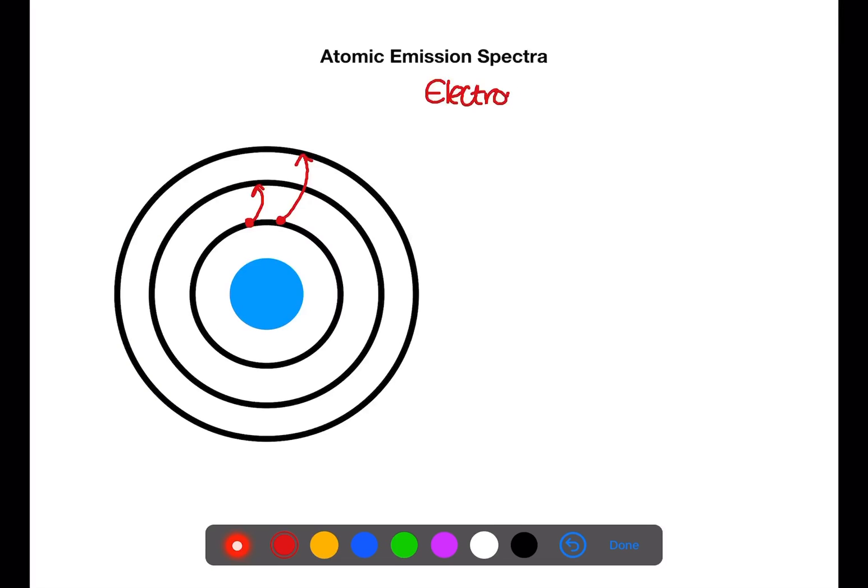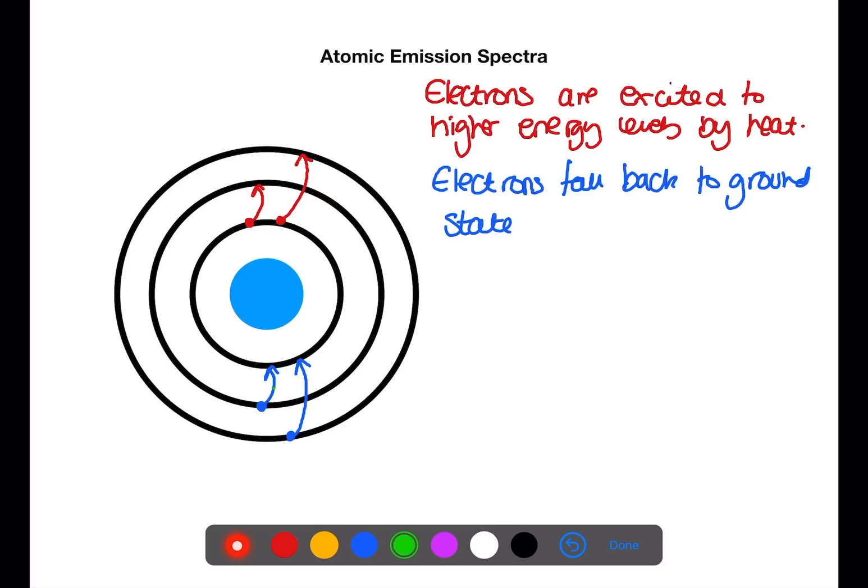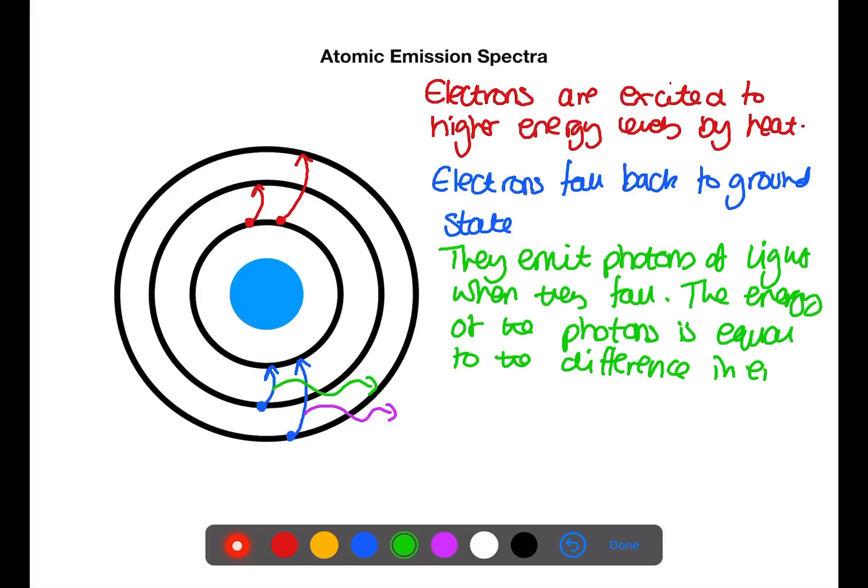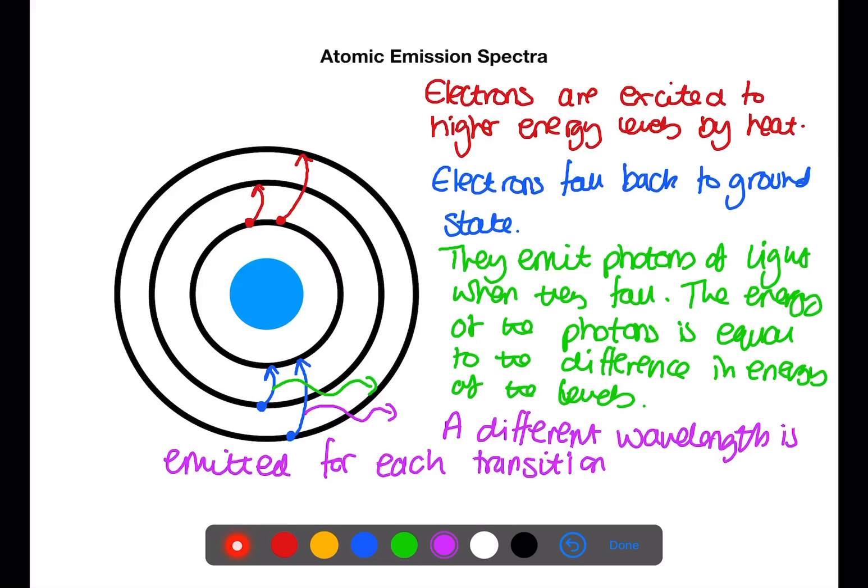In atomic emission spectra electrons are excited to higher energy levels by heat. They fall back down to ground state and release photons of light. The energy of these photons is equal to the difference between the levels. A line is seen on the spectrum for each wavelength of photon for each transition. The more intense the light emitted, the larger the sample is.